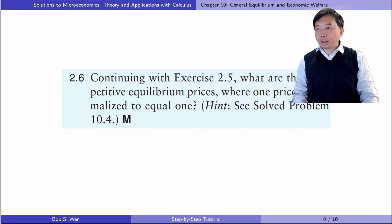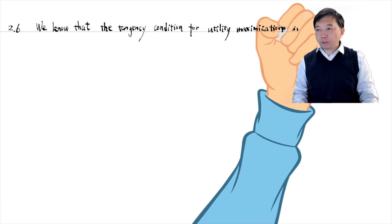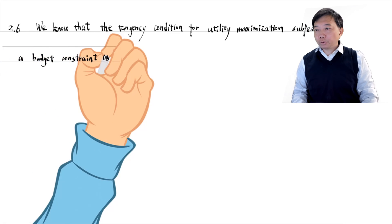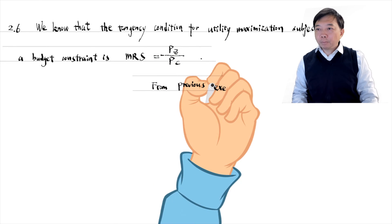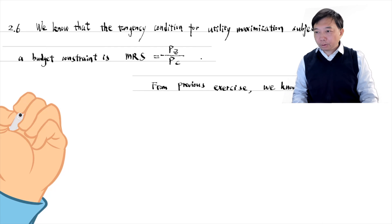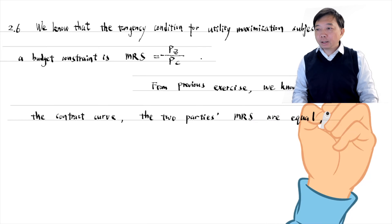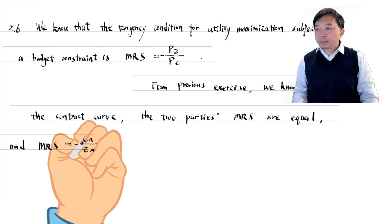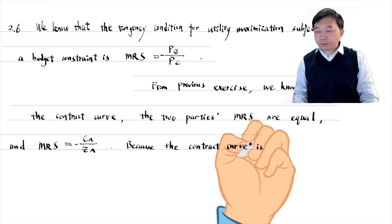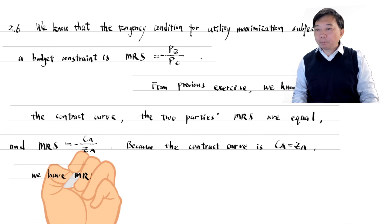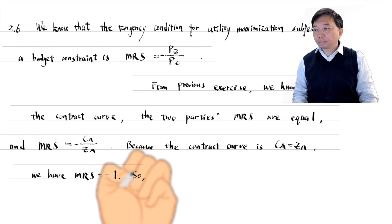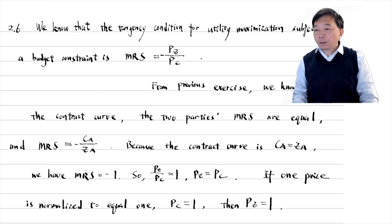Let's jump to exercise 2.6. Continuing with exercise 2.5, what are the competitive equilibrium prices, where one price is normalized to equal one? The tangency condition for utility maximization subject to a budget constraint is that the marginal rate of substitution equals the price ratio. From the previous exercise, we know that on the contract curve the two parties' marginal rates of substitution are equal and equal minus CA over CA. Because the formula for the contract curve gives CA equals CA, the marginal rate of substitution equals minus one. So the price ratio equals one, and if one price is normalized to equal one, then the other good's price is also one.